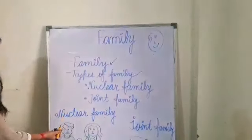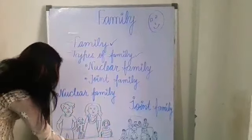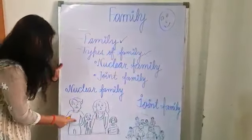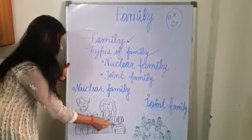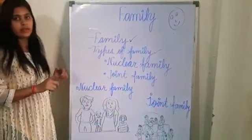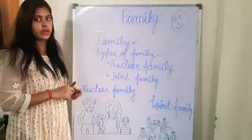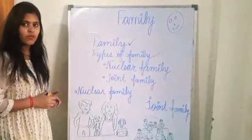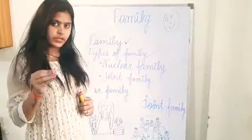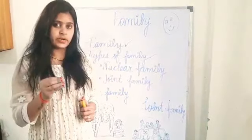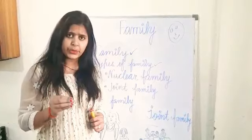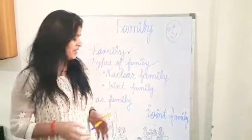Now, nuclear family. Look at this picture. In this picture, father, mother, brother, and sister all live in the same house and living together — it is called the small family and a happy family. Father and mother live with their children. One or two children living together is called a nuclear family or a small family.